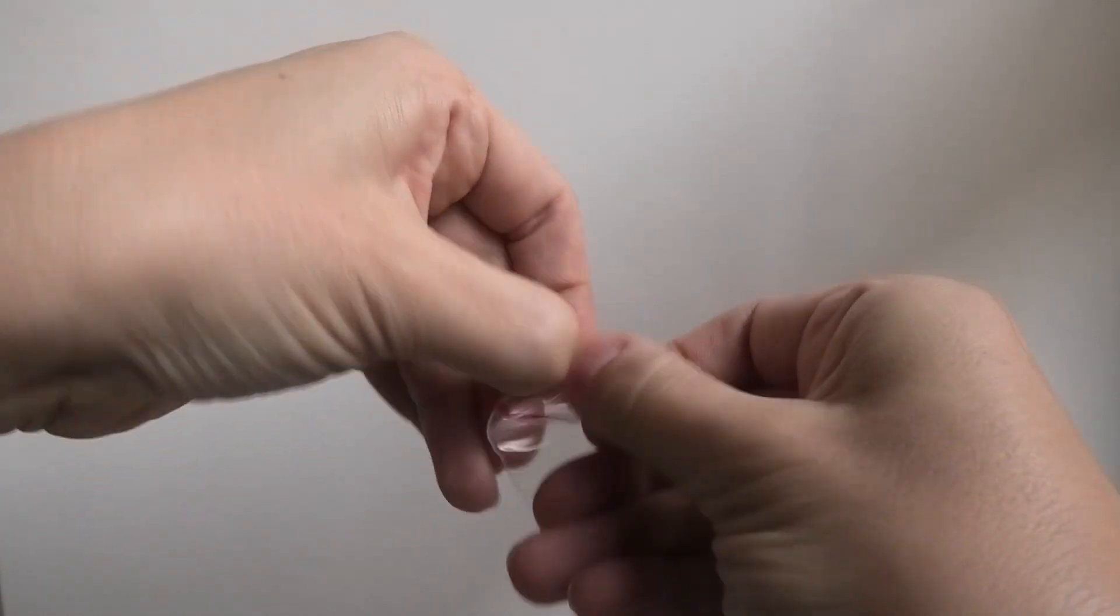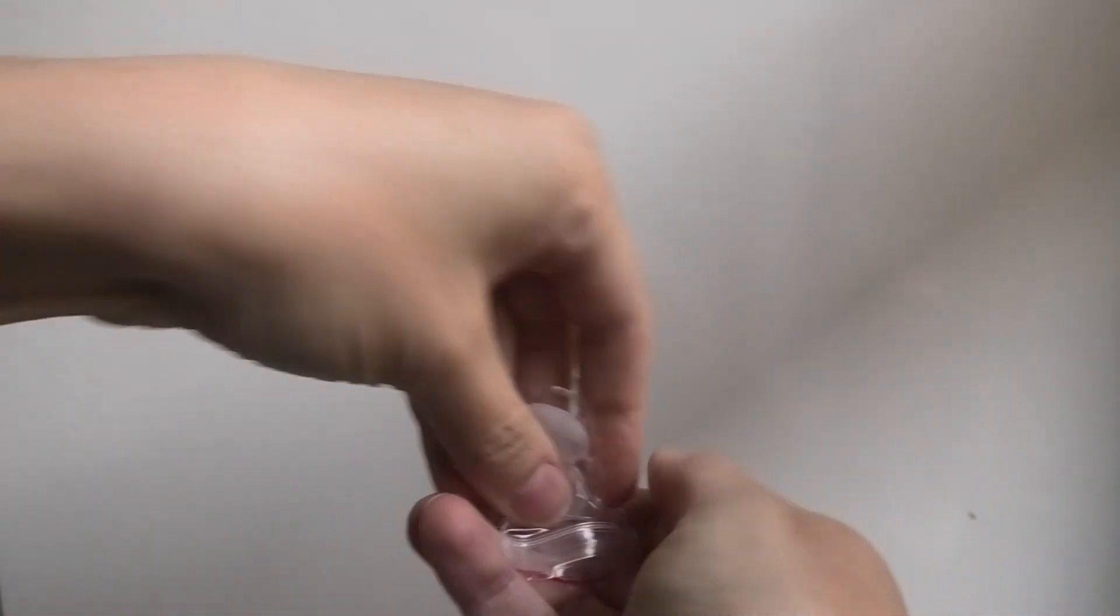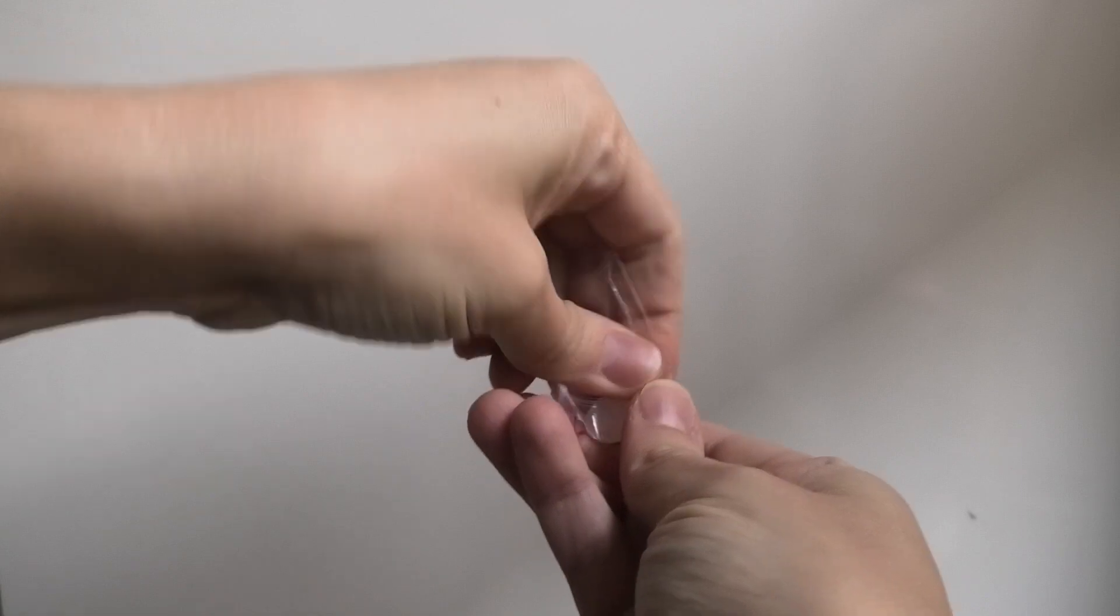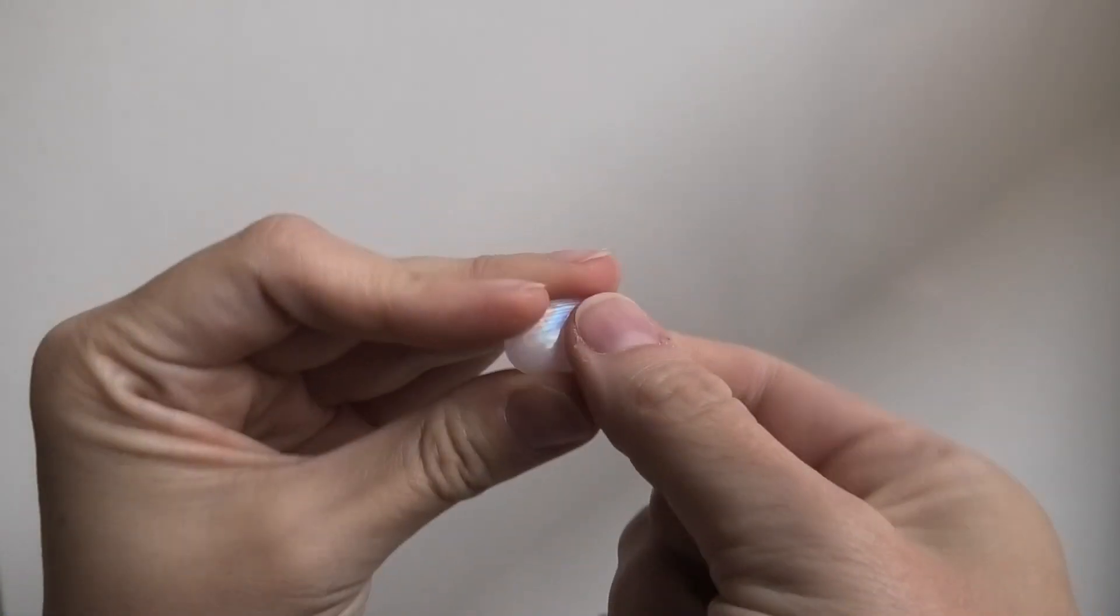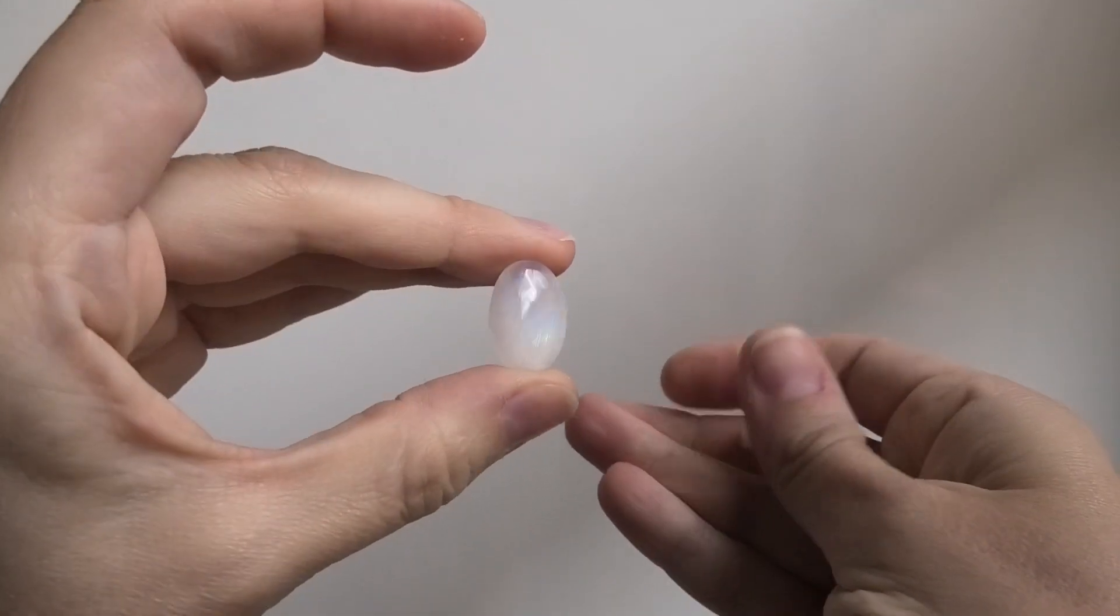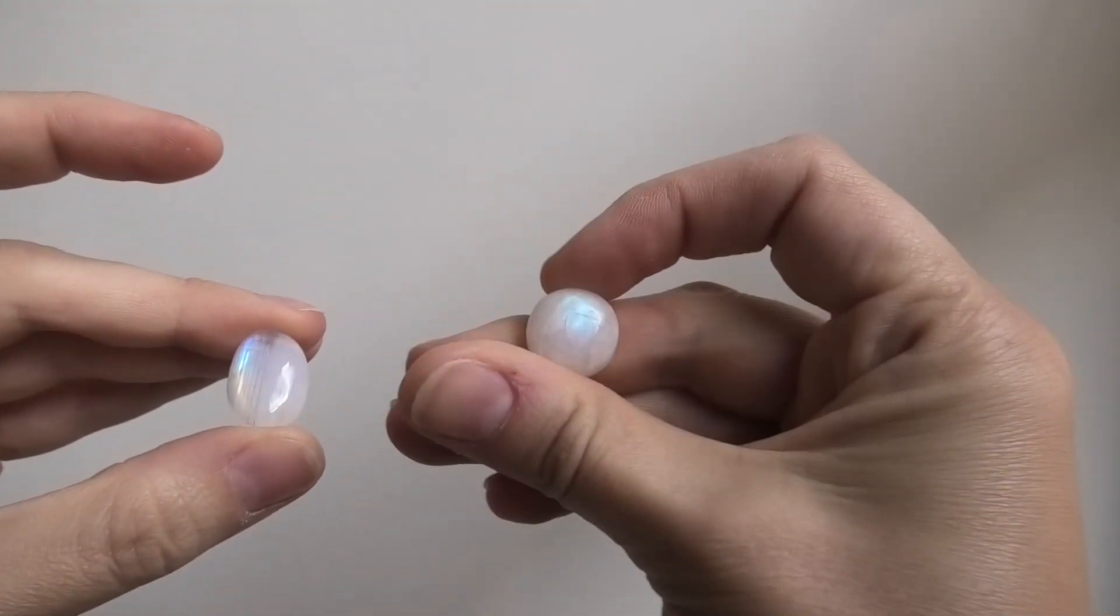Then we have two little moonstones, two little rainbow moonstones. A little oval one and a little round one.